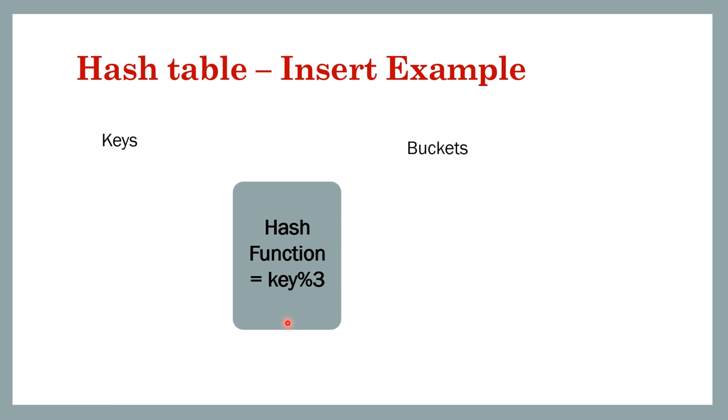We have some keys that will be coming in and some bucket ids. We know it's modulo 3 so we will have buckets 0, 1, and 2. Let's say we want to insert data having a key 10. 10 modulo 3 will be 1, so this hash function outputs 1, so 10 will be stored in bucket number 1.